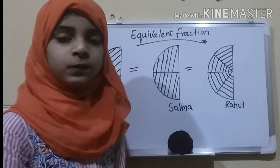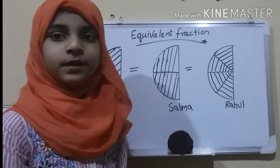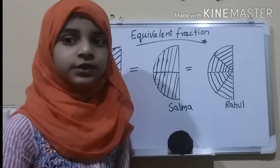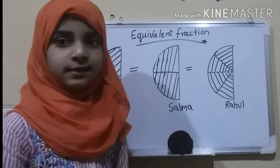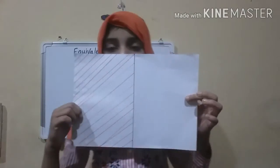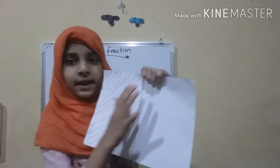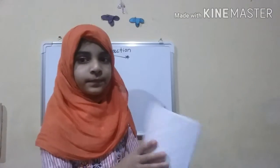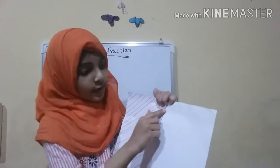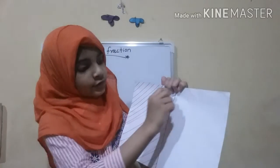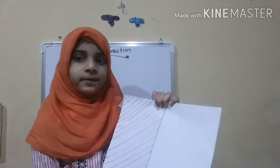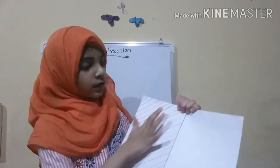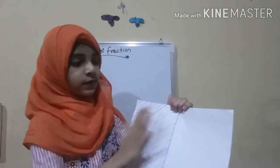Now let us do a simple activity. For this activity, all we need is a sheet of paper and some color pencils. To perform the activity, firstly take a sheet of paper and fold it into half, then open it. Now you can see a center line — just darken it with a color pencil, crayon, or sketch pen. Then color any one of the sides.